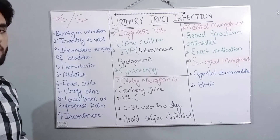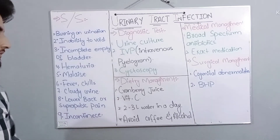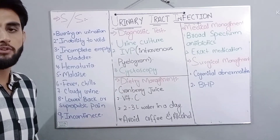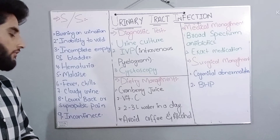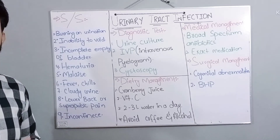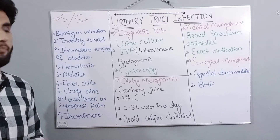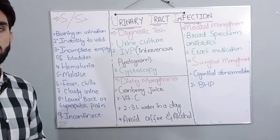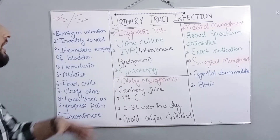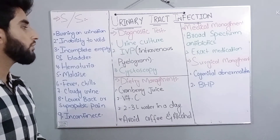Signs and symptoms of UTI include fever and chills, which are the basic signs of inflammation, cloudy urine due to the infection, lower back pain, suprapubic pain, or pelvic region pain, hematuria (blood in urine), and incontinence — especially in elderly patients or sometimes in children.